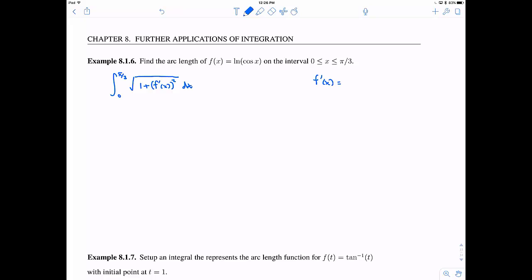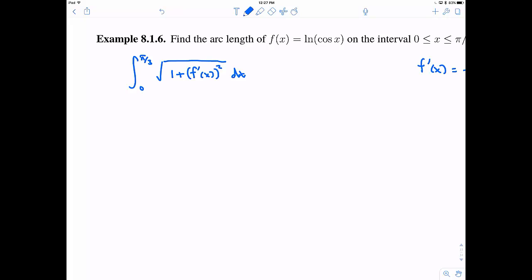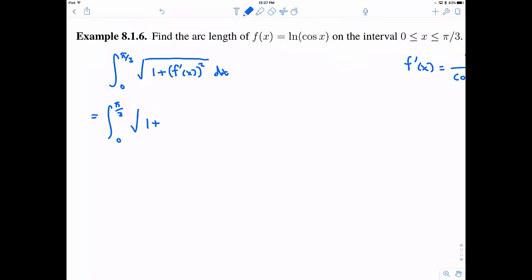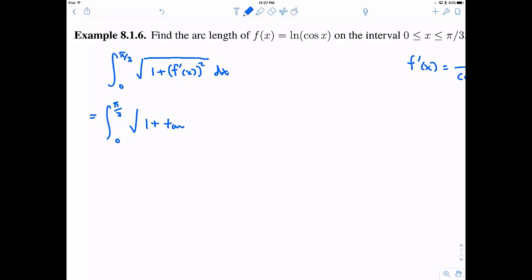Calculate out the derivative. The derivative of the natural log is 1 over the function. And then chain rule says I need to multiply by the derivative of the inside, a.k.a. negative sine. I'm going to need to square this. Sine over cosine, that's going to be tangent. This is negative tangent, but when I square a negative, it becomes positive. So this is the same thing as positive tangent squared.